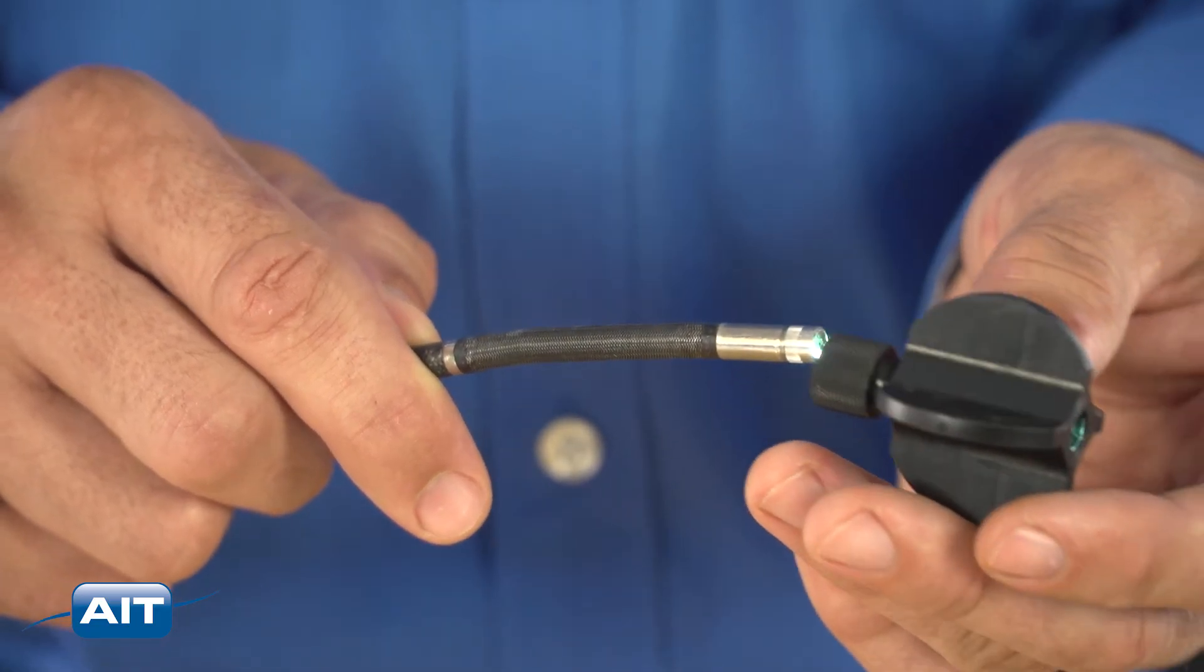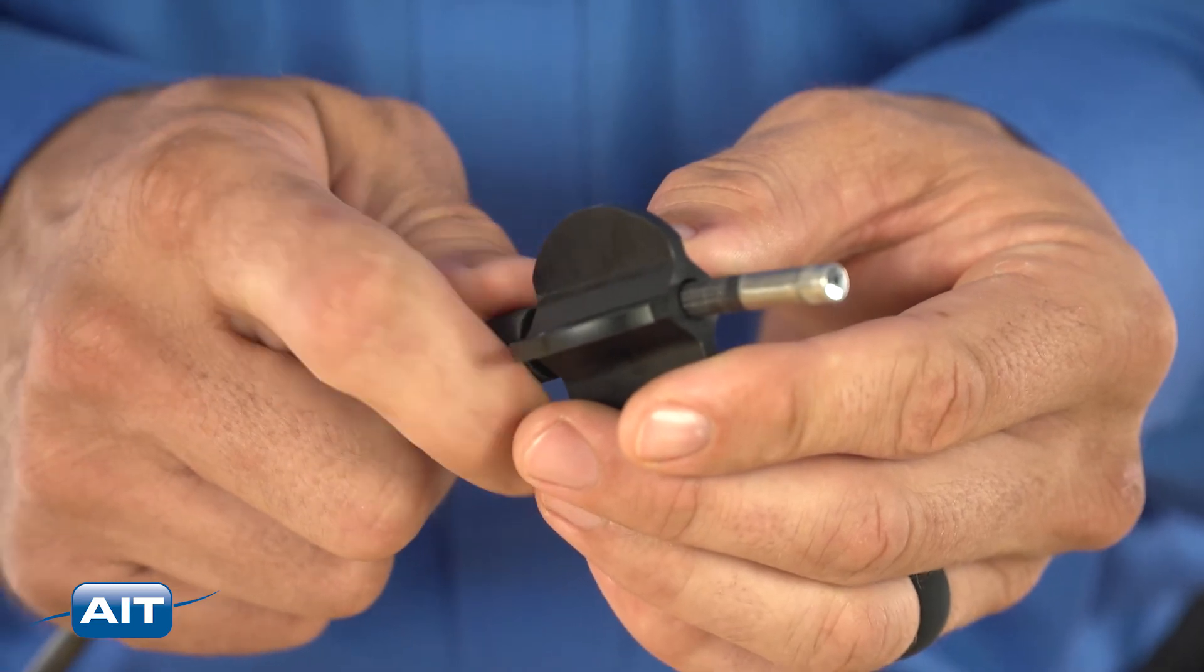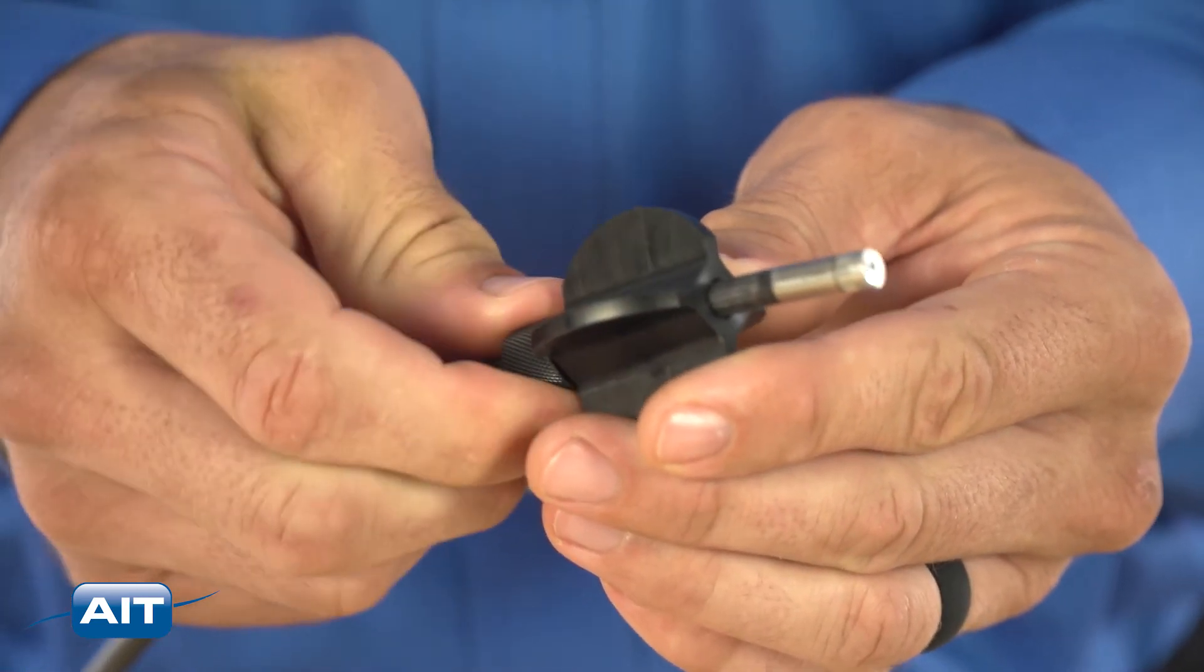Centering devices may also assist in protecting a flexible borescope, where the tip may otherwise plow through debris at the bottom of pipes.